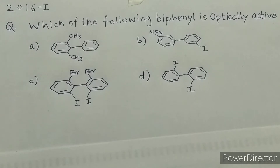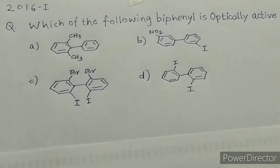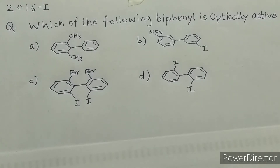When we talk about optical activity, for a molecule to be optically active two main conditions apply. First condition: the molecule must have an asymmetric chiral carbon atom. Second condition: the molecule must possess a non-superimposable mirror image. In the case of biphenyls, this is an exceptional case — biphenyls do not require an asymmetric chiral carbon atom to be optically active. In fact, in biphenyls you will not find an asymmetric chiral carbon atom.